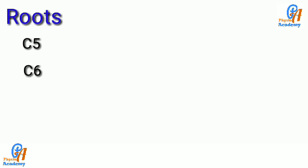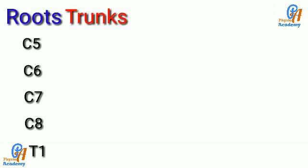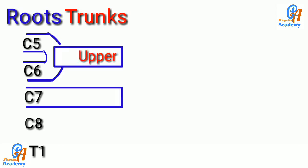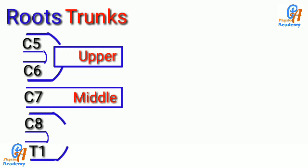The brachial plexus starts from the roots of C5, C6, C7, C8, and T1. These roots join to form the trunks. C5 and C6 join to form the upper trunk. C7 continues as the middle trunk. C8 and T1 form the lower trunk.